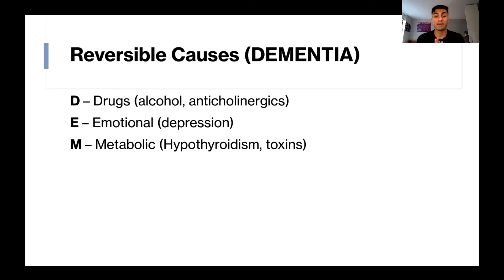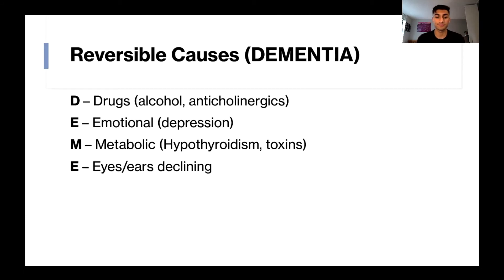Next is M for metabolic causes. This is a whole host of different things, but some examples are hypothyroidism and different toxic exposures. E is for impairments in the eyes or ears.